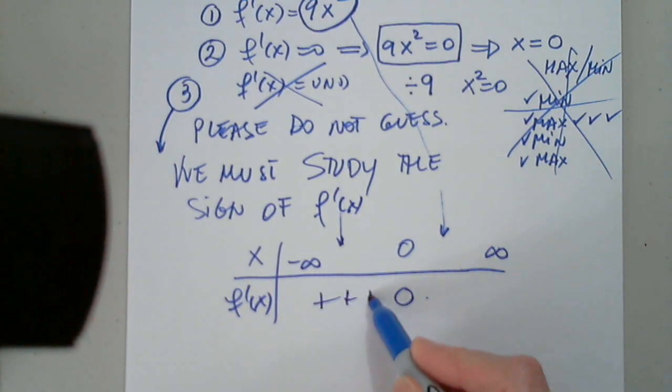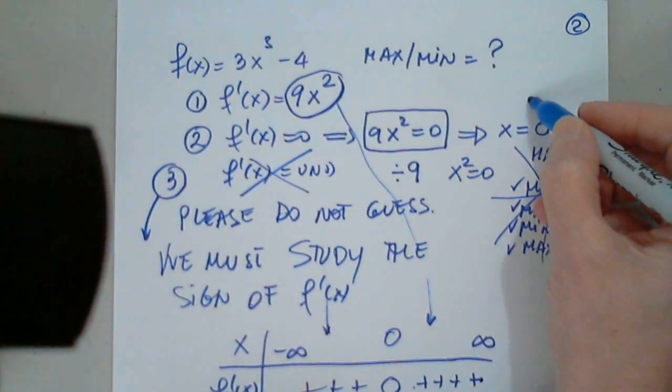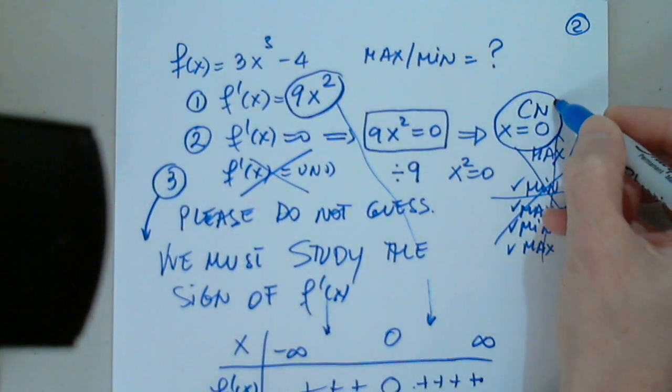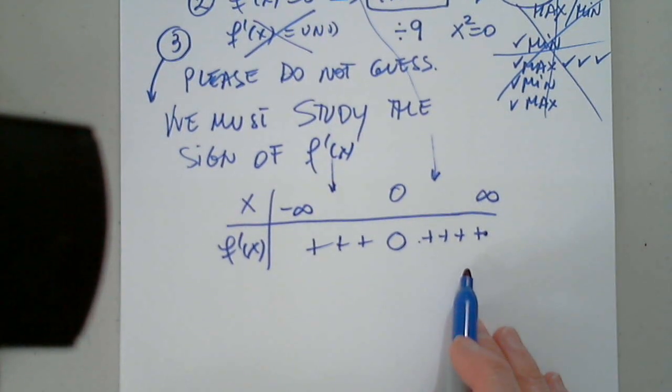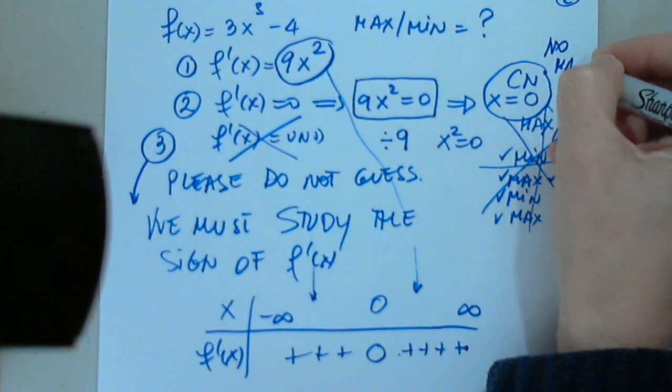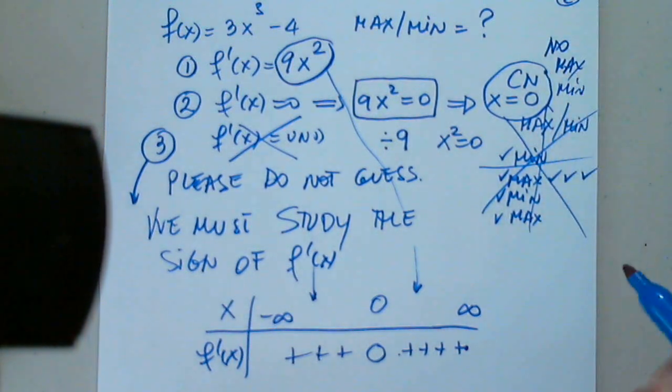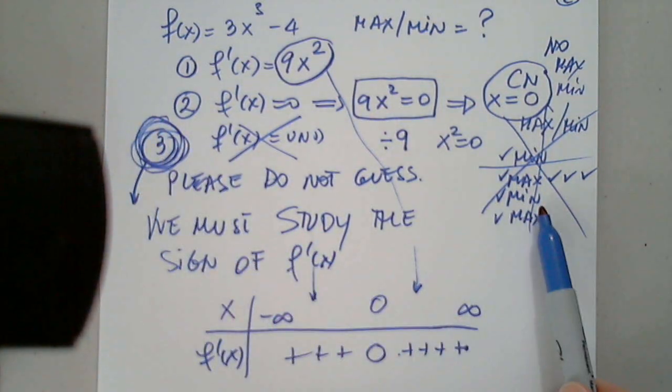Positive. Ah. So this is a critical number. But the derivative does not change sign. So no max or min. See what this is. Step 3. Without step 3, we cannot conclude.